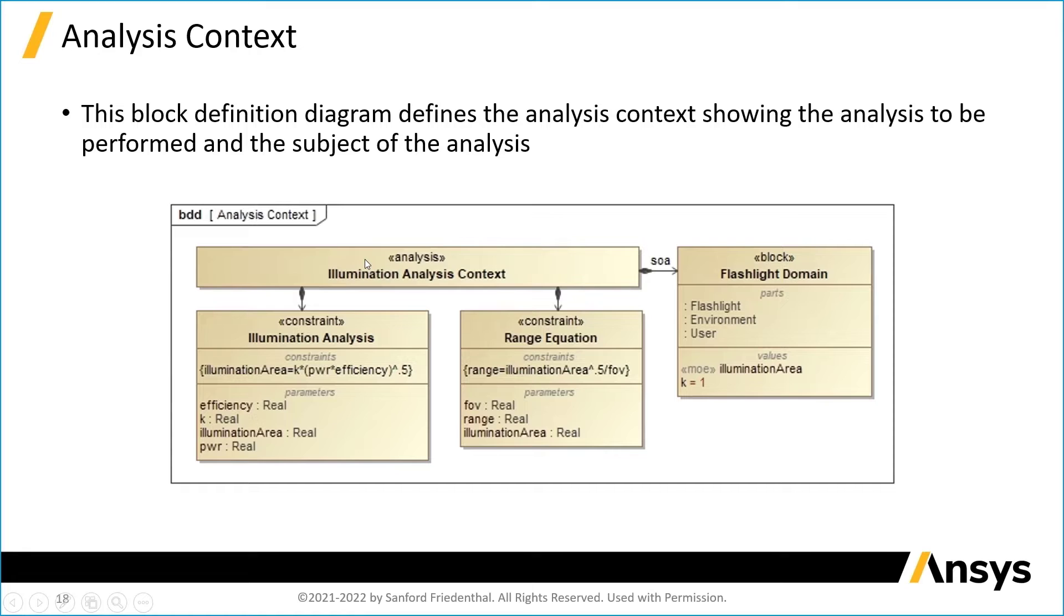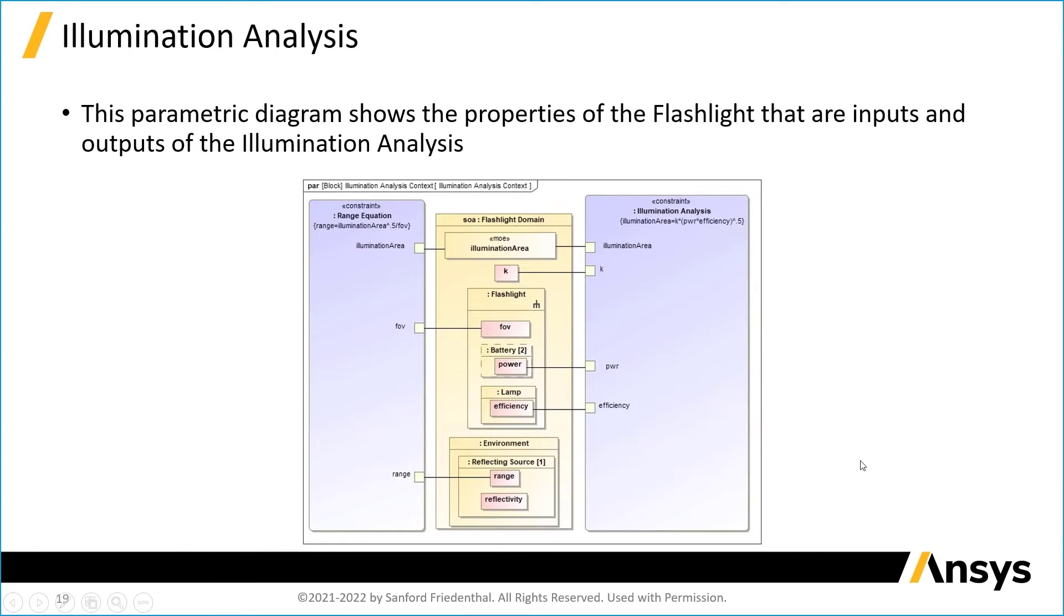We provide a context, we refer to the subject of the analysis—what is it we're analyzing—and then what are the analyses themselves that we're trying to specify, and just identify the input and output parameters. Once we've done that, you'll see on the next slide we have what's called a parametric diagram where we try and connect the value properties or the properties of the design to the parameters, the input and output parameters of the analysis. Let's look at that.